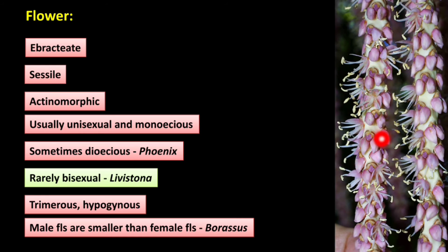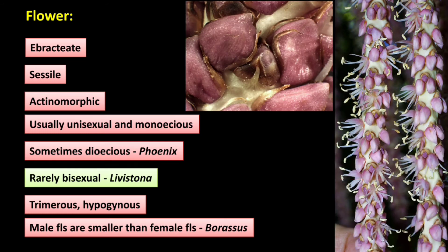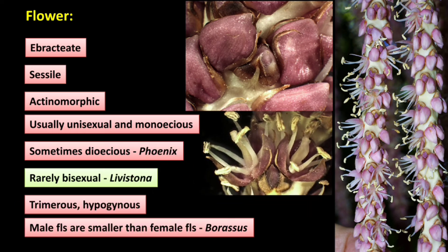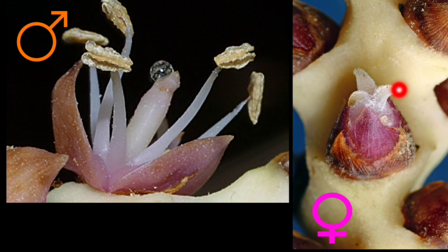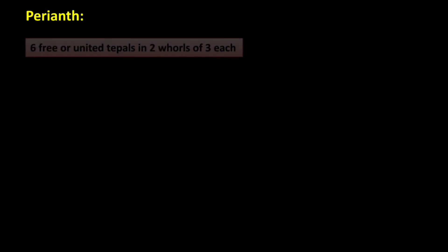Here you can observe the male and female flowers. In the male flowers the stamens can be seen clearly. In the female flower, a tricarpellary gynoecium is visible, but the stamens are absent.